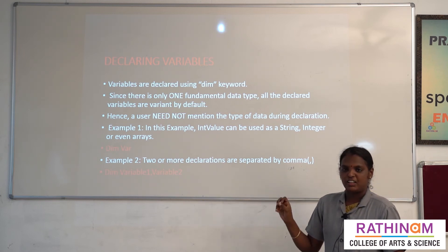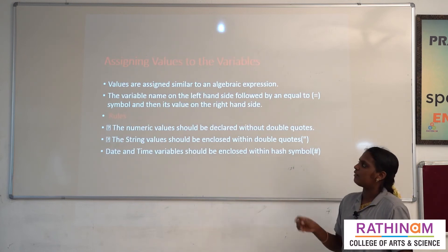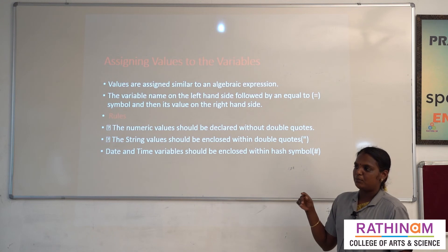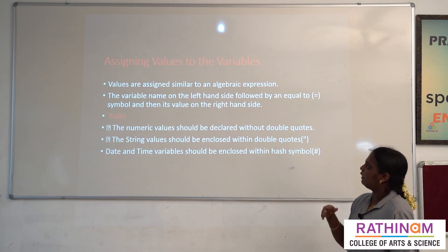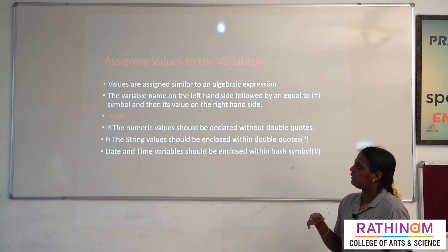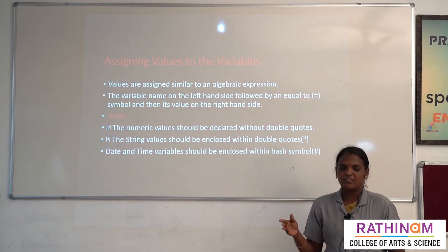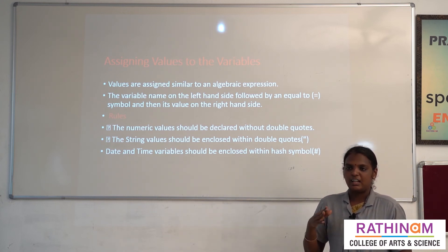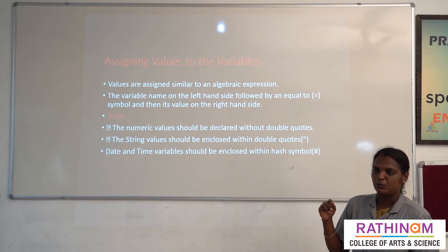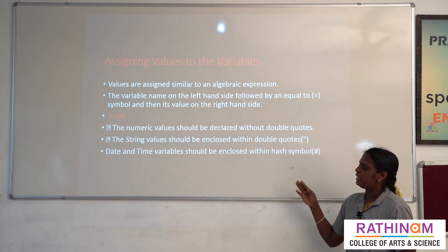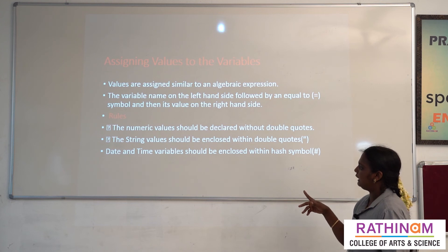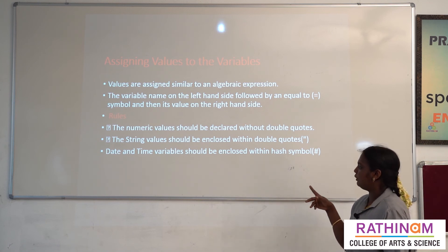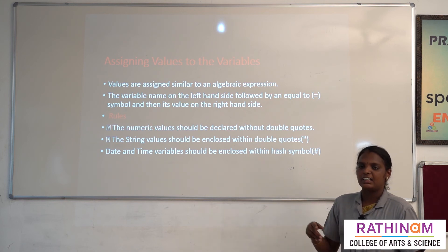For assigning values to a variable, it is similar to an algebraic expression: the variable name is on the left-hand side, followed by an equal sign, and the value is on the right-hand side. The right-hand side value is assigned to the left-hand side variable. Some rules for assigning values: numeric values should be declared without double quotes, string values should be enclosed within double quotes, and date and time values should be enclosed within the hash symbol.